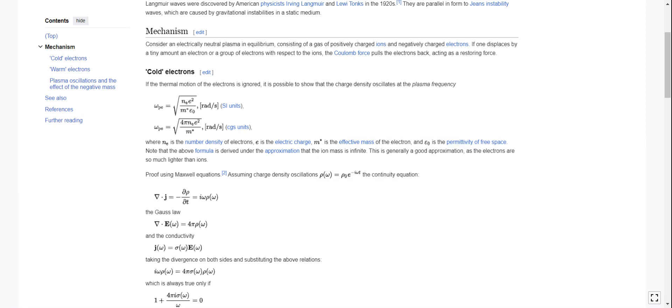Where n sub e is the number density of electrons, e is the electric charge, m star is the effective mass of the electron, and epsilon sub naught is the permittivity of free space, which is 8.85 roughly times 10 to the minus 12 with units of seconds to the fourth amperes squared over meters cubed kilograms. Weird units, but that is the permittivity of free space.